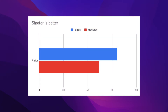For Flutter in VS Code: in Big Sur it took 1 minute 4 seconds, whereas in Monterey it took 49 seconds. A simple Flutter counter application was created, and the time recorded was from the second successful run.